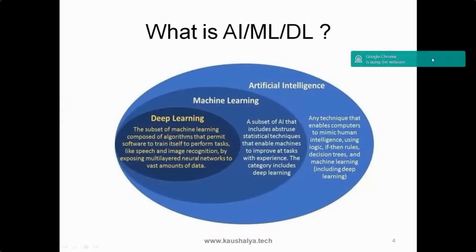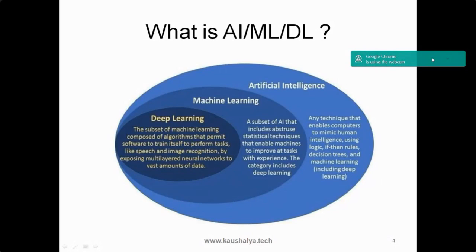Any technique that enables computers to mimic human intelligence is called artificial intelligence. One subset is machine learning, where we use statistical techniques to enable machines to improve at tasks with experience — just as a human being improves by doing the same task multiple times. In the case of deep learning, we perform tasks using neural networks, simulating the way the biological neural network of a human being works.